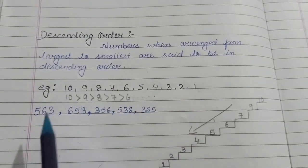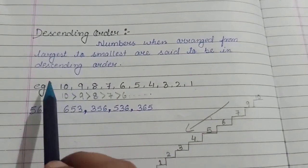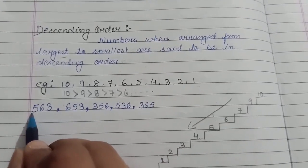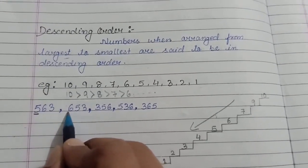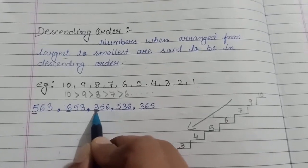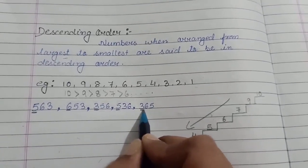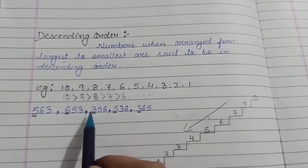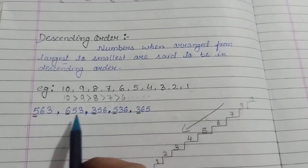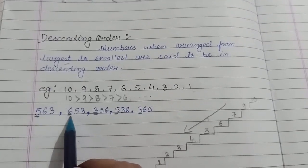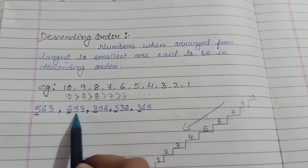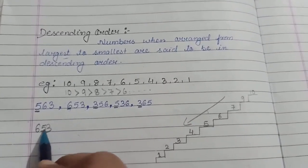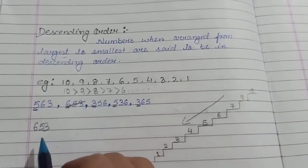So how will we arrange? Again we will compare, but this time we will find the largest number. Once again we will underline the hundreds place number: here it is 5, here it is 6, here it is 3, here again 5 and here again 3. So 6 is the largest number here. So 653 is the largest number and we will write 653 here and we will cross this number so we will not get confused.